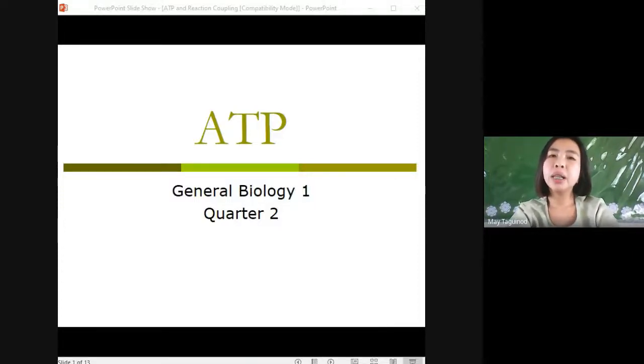Good morning everyone. Our first topic in general biology 1 for quarter 2 is all about ATP and reaction coupling. So I will share to you the most important processes of ATP. So what is ATP? ATP stands for adenosine triphosphate. So ATP is considered as the universal energy currency for metabolism.